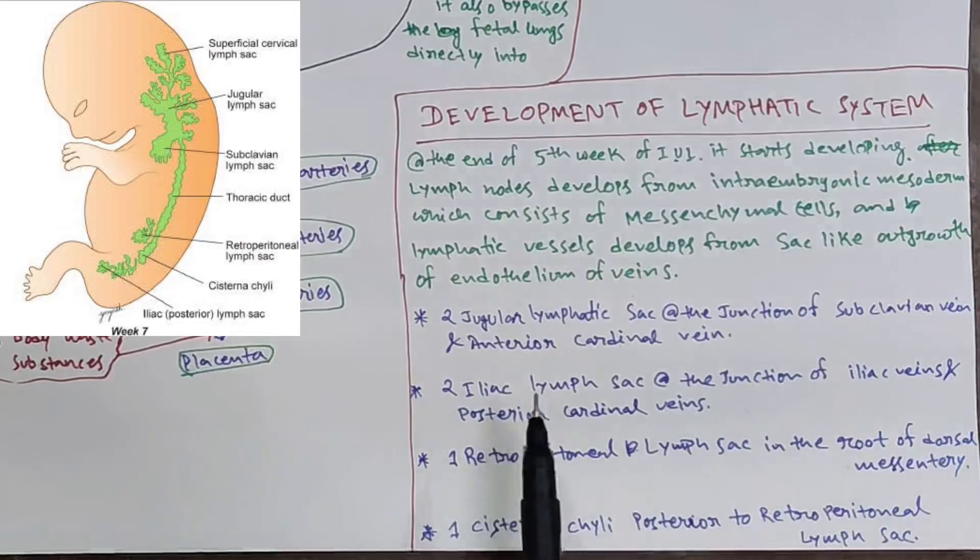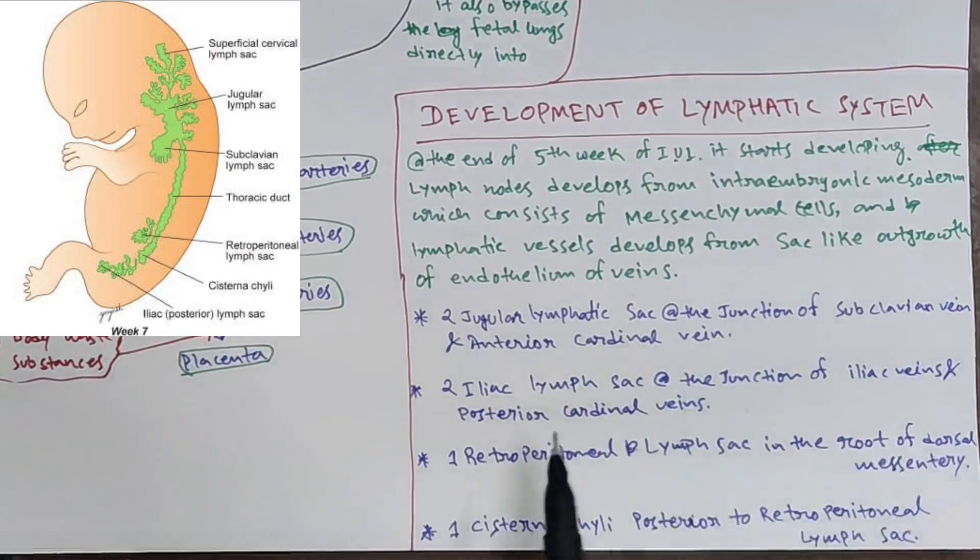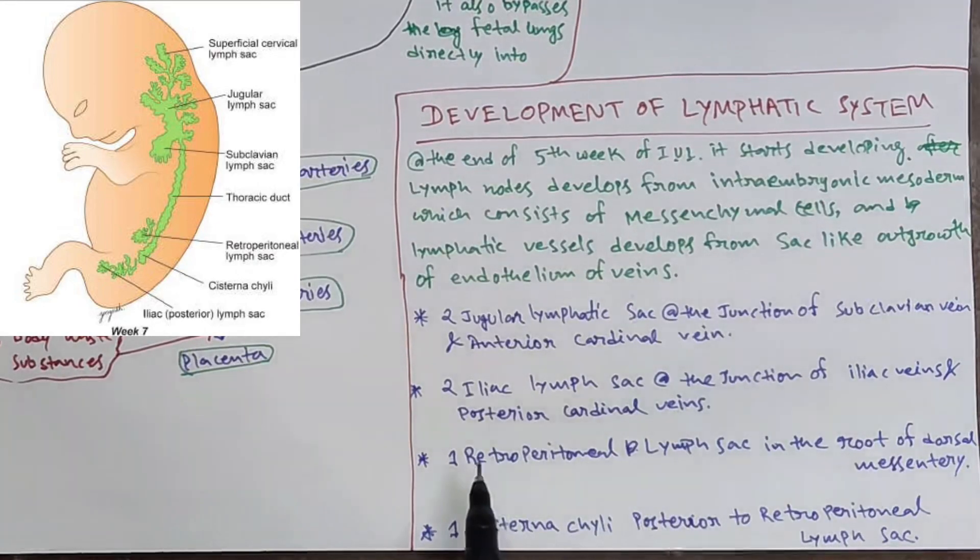Two iliac lymph sacs develop at the junction of the iliac vein and posterior cardinal vein. Posterior cardinal vein and iliac veins you already know about.